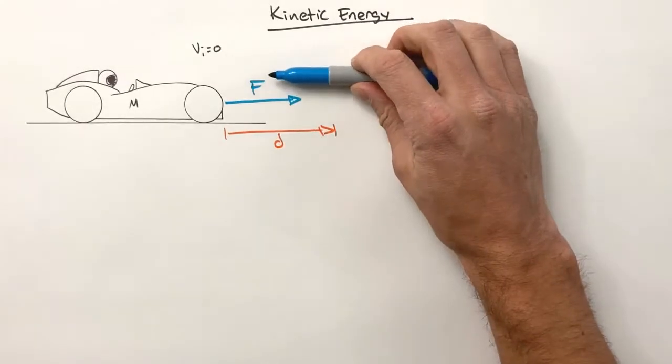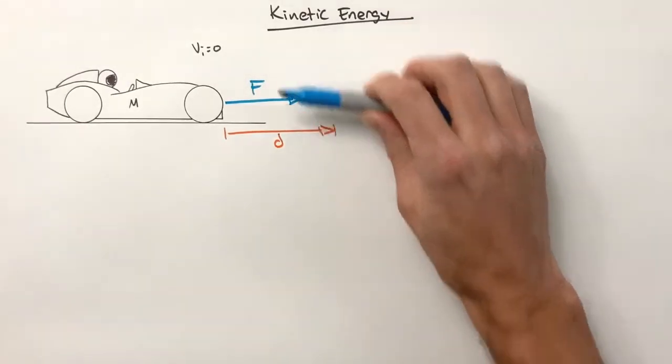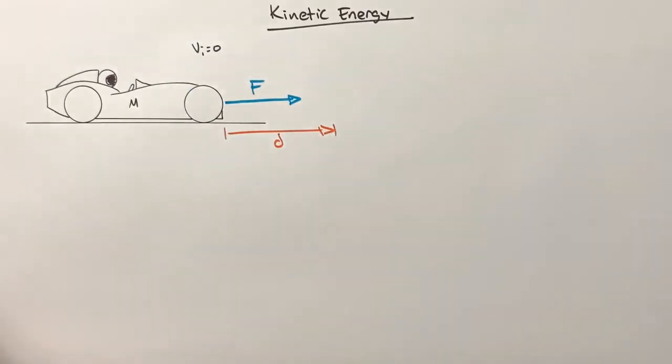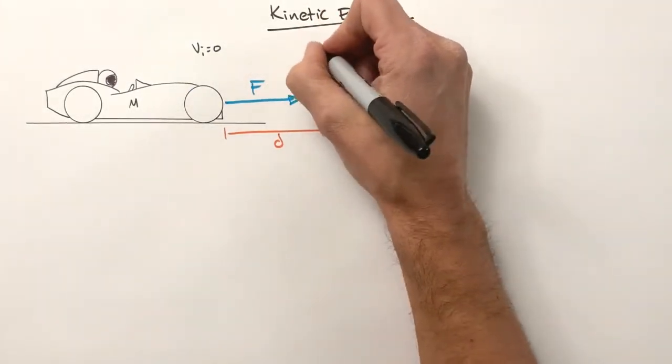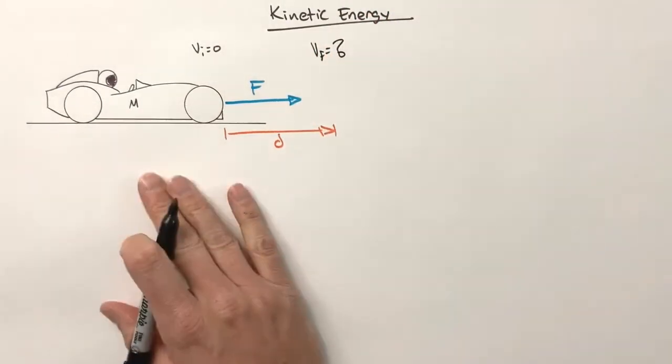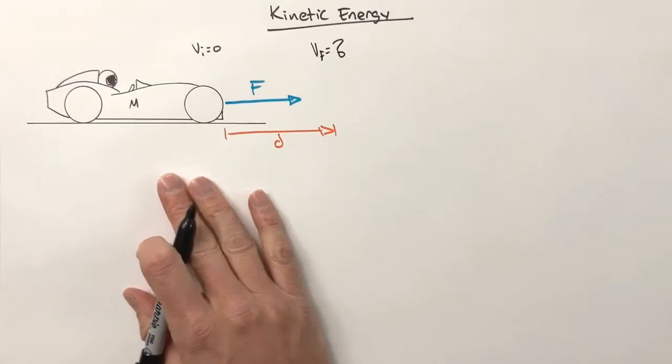Now again, I don't care how big F is or how large d is. These are just variables. We're going to work out this entire problem in terms of variables. And in this problem, what we're actually solving for is the final velocity.